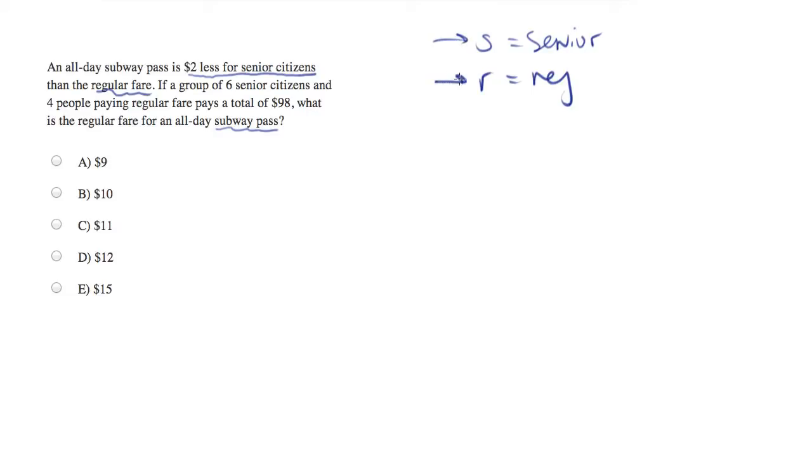Good variable names here, S and R. Bad variable names, X and Y. They don't mean anything. So let's pick something that means something.